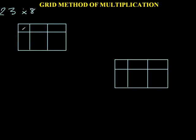In this first column I put the times sign and on this side, because I'm multiplying 23 by 8, I've got number 8 on this side because that's only units. But 23 has got two tens which means it's 20 and three units. So that's how I'm going to put them in the grid. Now what I need to do is I need to multiply them.